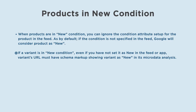If a variant is in new condition, even if you have not set it as new in the feed or app, the variant's URL must have schema markup showing the variant as new in its microdata analysis.